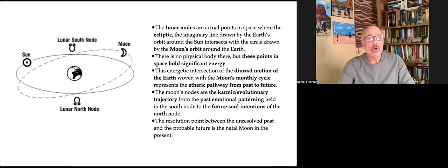The lunar nodes are actual points in space, where the ecliptic, which is the imaginary line drawn by the Earth's orbit around the sun, intersects with the circle drawn by the moon's orbit around the Earth. There's no physical body there, but these points in space hold significant energy. This energetic intersection represents the etheric pathway from past to future.